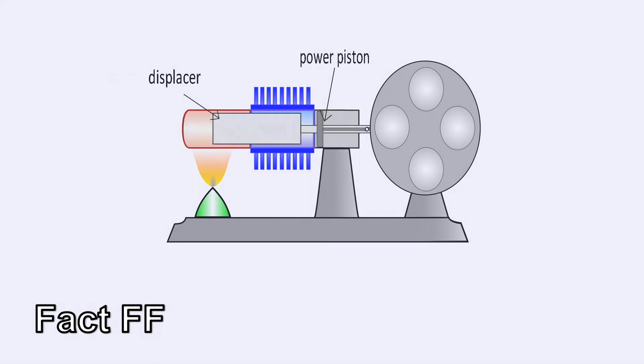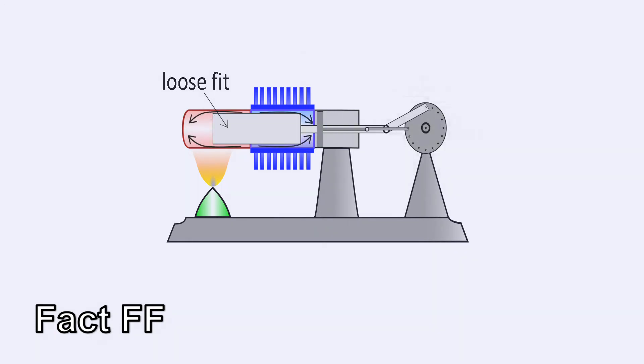Within that cylinder are the power piston and a displacer. The displacer is a loose fit; its job is to shuttle air back and forth within the cylinder.